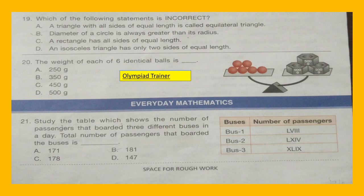Question 20: The weight of each of six identical balls is dash. Options: A: 250 gram, B: 350 gram, C: 450 gram, D: 500 gram.